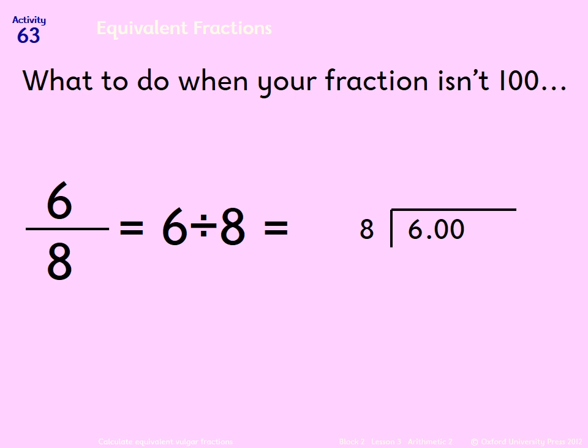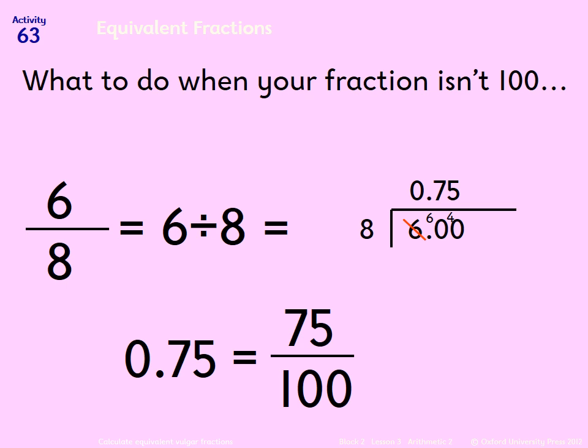You can put 0.00 on the end, and then we do 8 into 6. It doesn't fit, so we'll carry the 6 until we get our answer of 0.75. We know 0.75 is the same as 75 over 100, which is 75%. So there's two methods that you can use with those trickier ones.